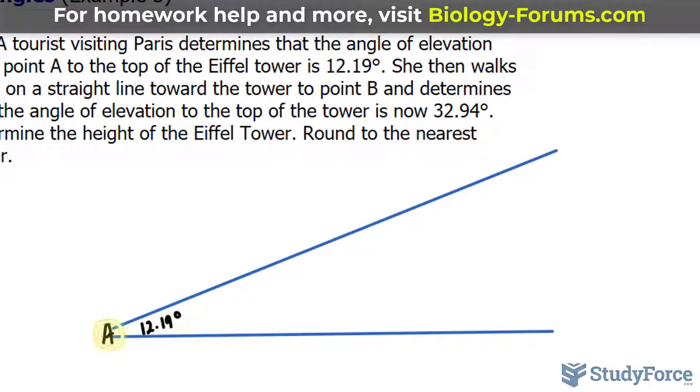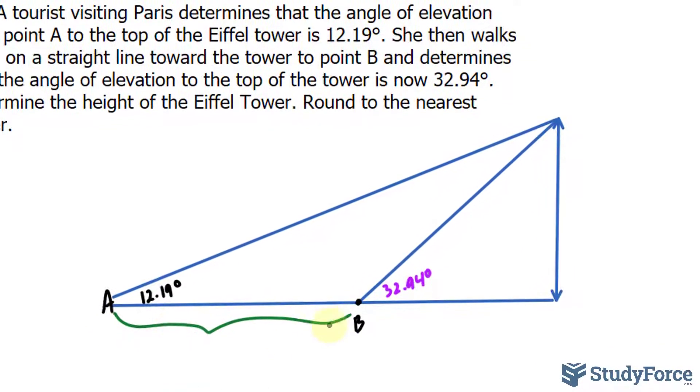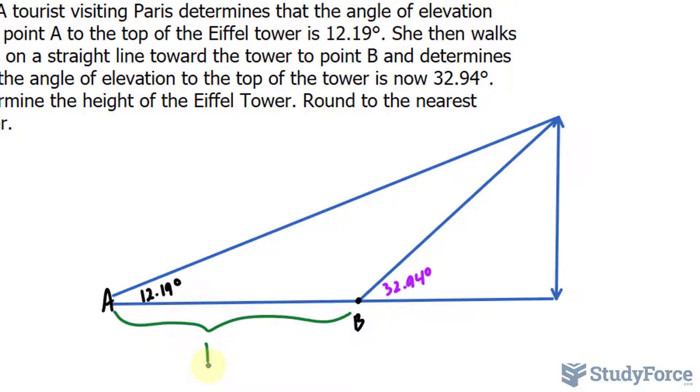This person then walks one kilometer in this direction, and we have a second point which we'll call B. Again, the angle of elevation this time happens to be a little larger, 32.94, and that's what you would expect. The Eiffel Tower is from here to here. And the distance from here to here is one, one kilometer.